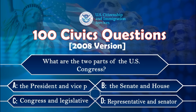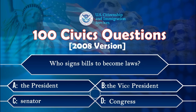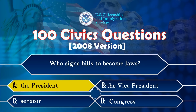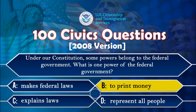What are the two parts of the US Congress? The Senate and House. Who signs bills to become laws? The President. Under our Constitution, some powers belong to the federal government. What is one power of the federal government? To print money.